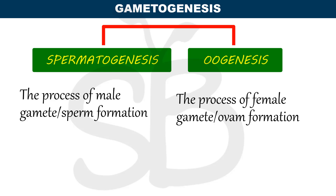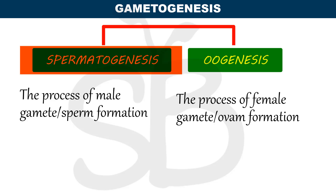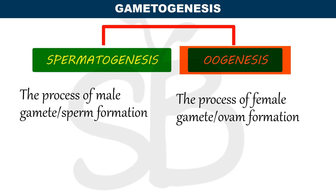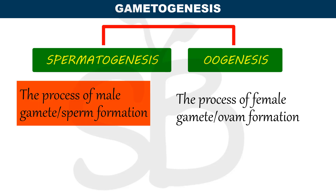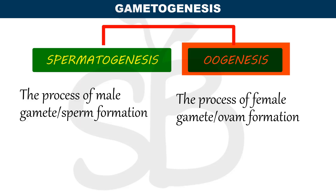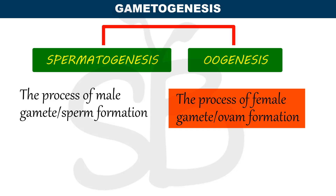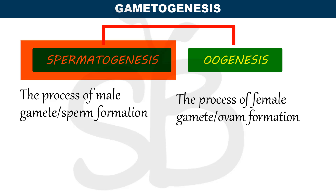Gametogenesis involves the primary sex organs. It is all about Spermatogenesis and Oogenesis. Spermatogenesis results in the production of sperm, and Oogenesis results in the production of eggs. Now we are going to discuss Spermatogenesis.